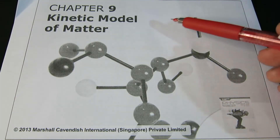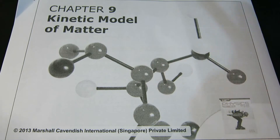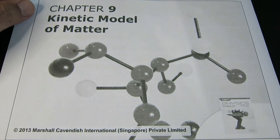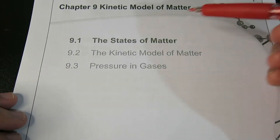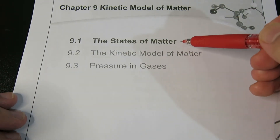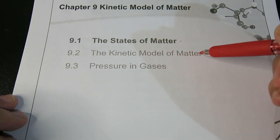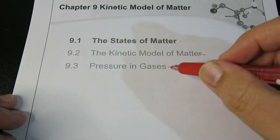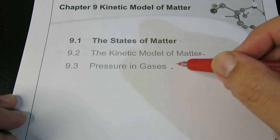Hi guys, we're talking about the chapter of Kinetic Model of Matter. It's the first chapter that we're covering in Thermal Physics. The breakdown of the chapter: we'll be covering what are the three states of matter, what exactly is the Kinetic Model of Matter, and finally our PVT — pressure, volume, and temperature — relationship in gases.